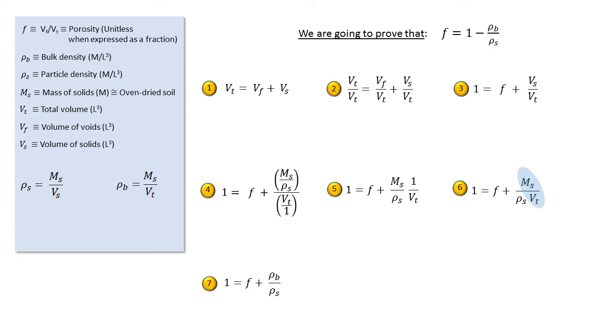If we keep going with our proof, we see that we are now very close to our original expression. And actually, if we rearrange the terms here, we can get the initial relationship. Like this, we have proved that porosity equals one minus the bulk density divided by the particle density.